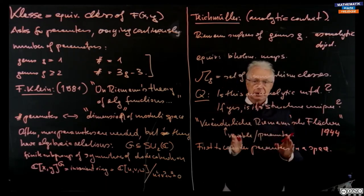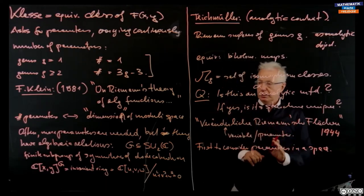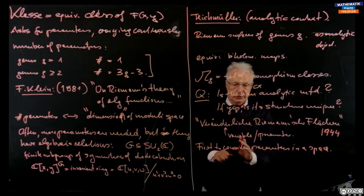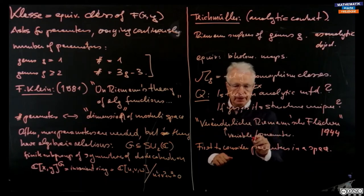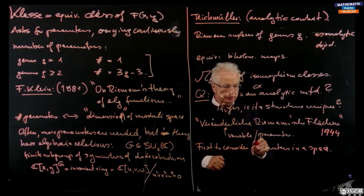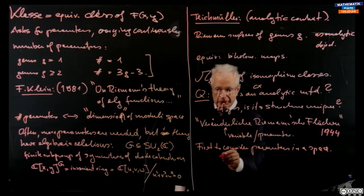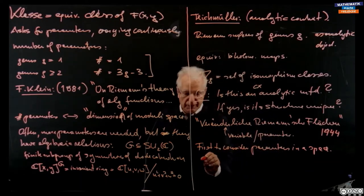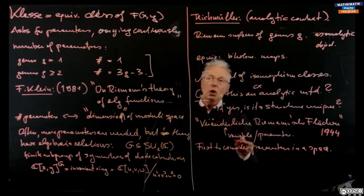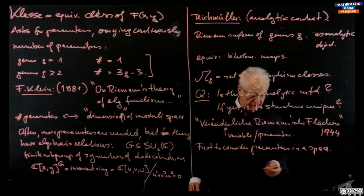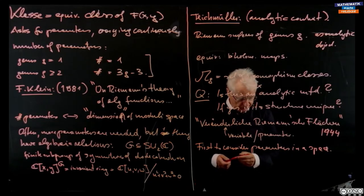Teichmüller is the first one to think of the moduli as a space — the first to consider parameters in a space. This paper is from 1944, almost a century after Riemann. In this year he defines what an analytic manifold is; the concept of analytic manifold was not very familiar at that time. People were just working with equations and variables, but the general framework did not exist.